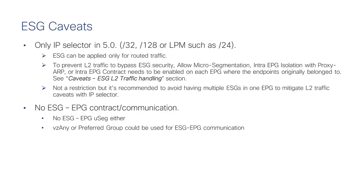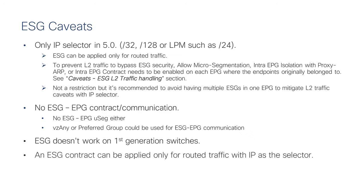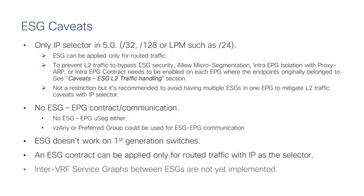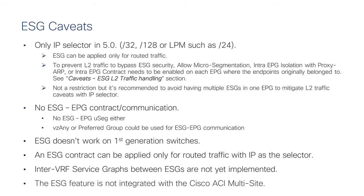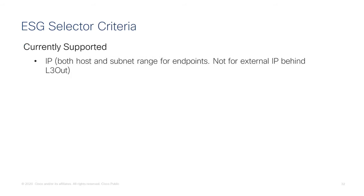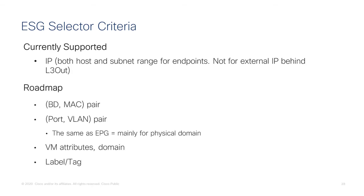ESG-to-EPG contracts could be useful for migration purposes. For migration today you can use VZ Any or preferred groups. First-generation switches are not supported, but all EX and newer leafs work. An ESG contract can be applied for routed traffic with IP selectors. Inter-VRF service graphs between ESGs are not yet implemented, and ESG features are not yet integrated with Multi-Site.